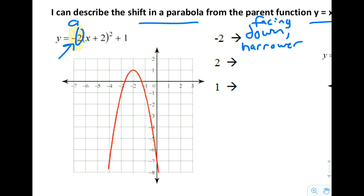If it was 1, just negative 1, it would be the normal width. If it was, let's say, 1 half or 2 thirds, something less than 1, then we would be wider like that.